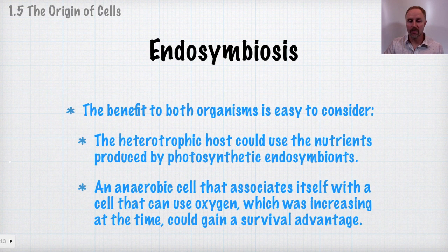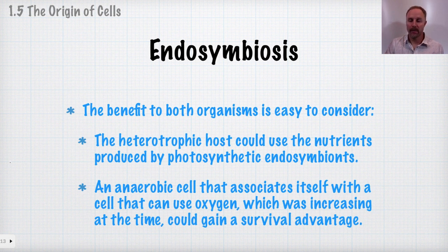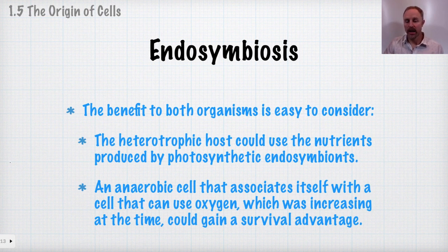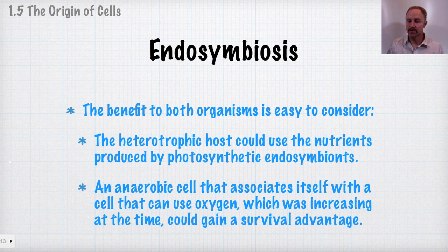The benefits of this association are easy to consider when you realize the environment was changing rapidly. Photosynthetic endosymbionts could use light energy to create carbohydrates that the heterotroph could benefit from. Additionally, as oxygen was accumulating in the atmosphere and oceans, it was toxic to anaerobic bacteria. An anaerobic cell associating with a bacterium that could use oxygen — like the ancestor of mitochondria generating ATP — gave both a survival advantage: one gained protection from oxygen's harmful effects, the other gained a ready source of nutrients and protection from predators.